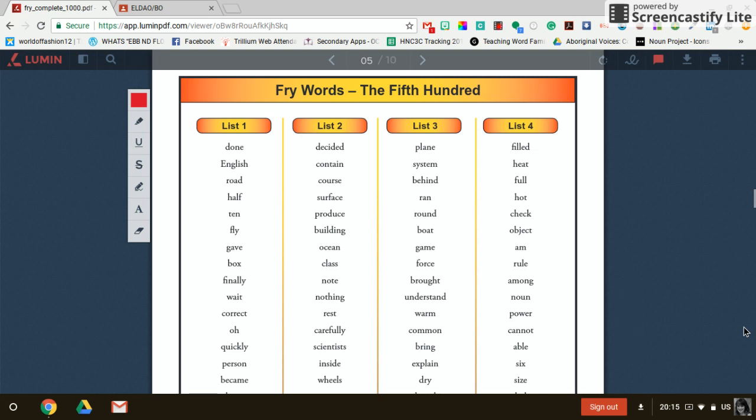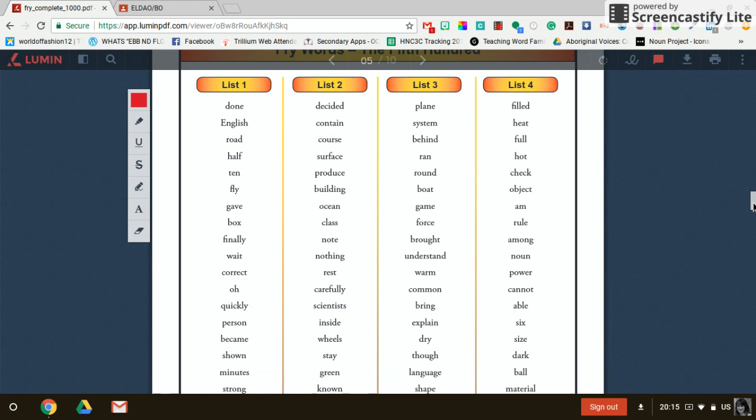Alright, this is the last set of fry words. It's the fifth hundred, so it's five hundred to five hundred and ninety-nine or six hundred. So we're gonna do all four lists just as we've been doing, and I will say each word twice. The idea is you repeat after me so you can practice saying it the way I'm saying it. So we're gonna start here at list one.